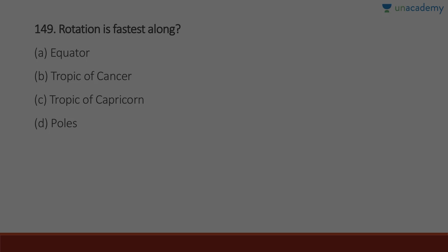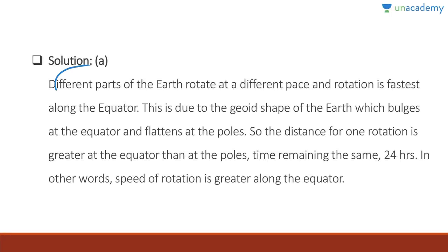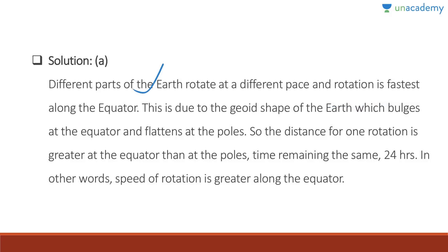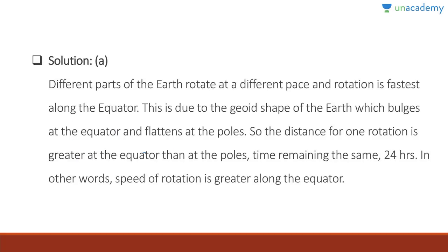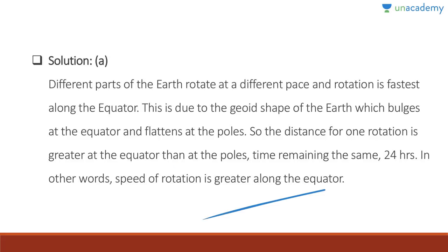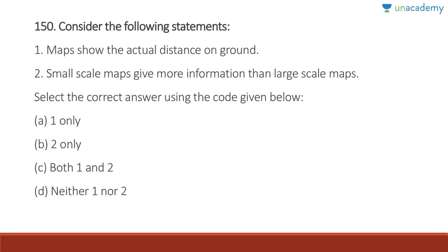Question 149: Rotation is fastest along the equator — absolutely correct. Different parts of the Earth rotate at different speeds, and rotation is fastest along the equator due to the geoid shape. Earth is neither a perfect sphere — it is a geoid that bulges at the equator and flattens at the poles. The distance for one rotation is greater at the equator than at the poles, but since the time is the same, the speed of rotation is greater along the equator.